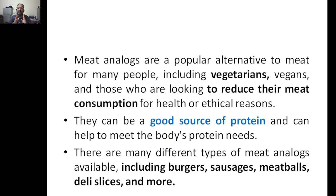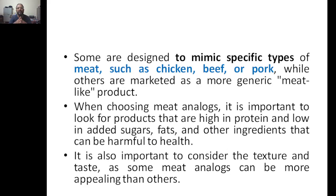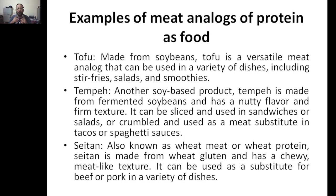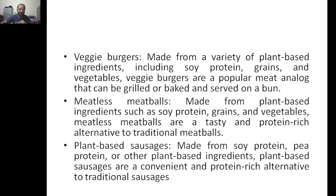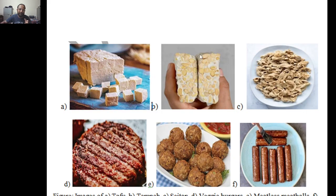There are many different types of meat analogues available, including burgers, sausages, meatballs, deli slices, and more. Some are designed to mimic specific meats such as chicken, beef, or pork, while others are marketed as more generic meat-like products. When choosing meat analogues, it is important to check for added sugars or fats. Examples include tofu, tempeh, seitan, veggie burgers, meatless meatballs, and plant-based sausages.